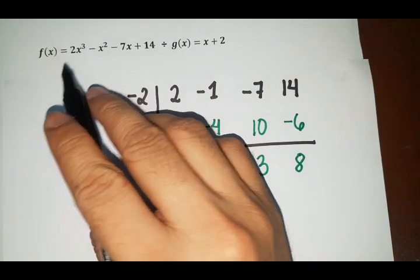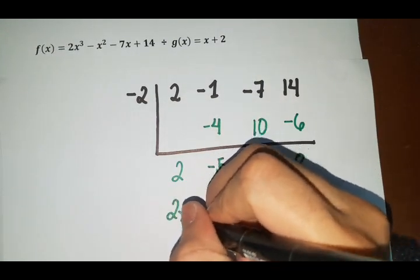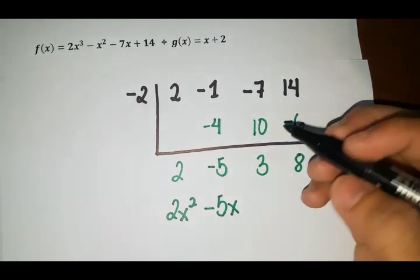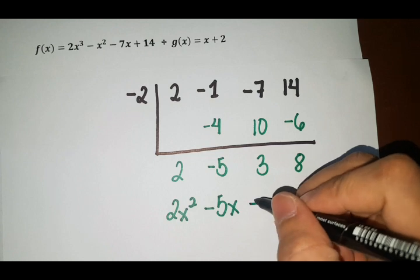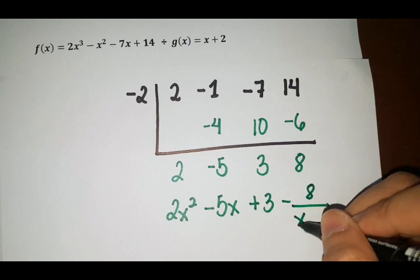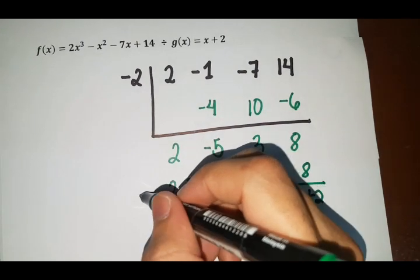So 2x cubed divided by x, so that is x squared. So that is 2x squared minus 5x plus 3 plus 8 over x plus 2. That is your answer.